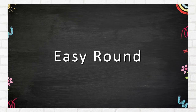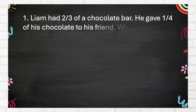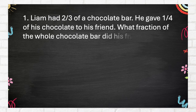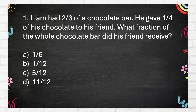Easy Round. Number 1. Liam had two-thirds of a chocolate bar. He gave one-quarter of his chocolate to his friend. What fraction of the whole chocolate bar did his friend receive? A. One-sixth. B. One-twelfth. C. Five-twelfths. D. Eleven-twelfths.